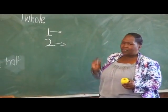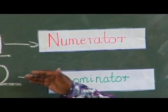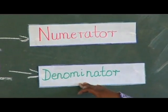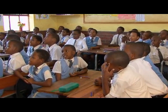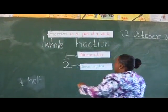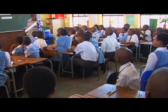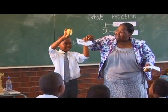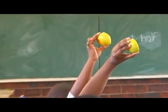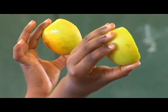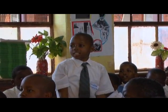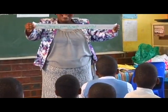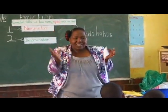What do we call the top number of a fraction? This number which has a numerator and a denominator is called a fraction. Fraction is a part of a whole. The numerator is the top number of a fraction — it tells us how many parts are used. And the denominator tells us into how many parts the whole is divided.